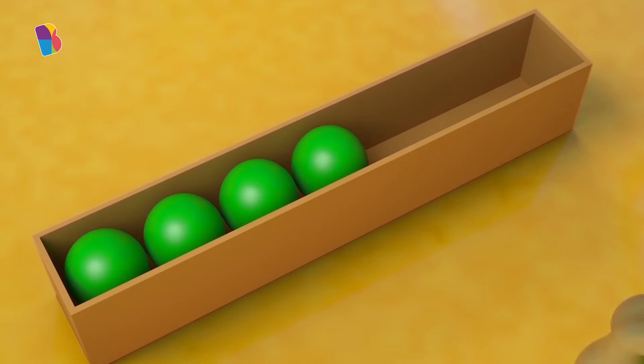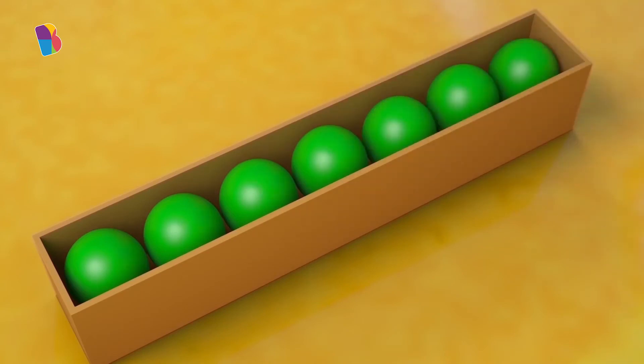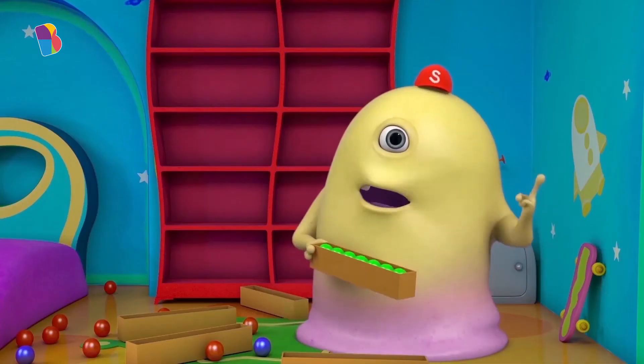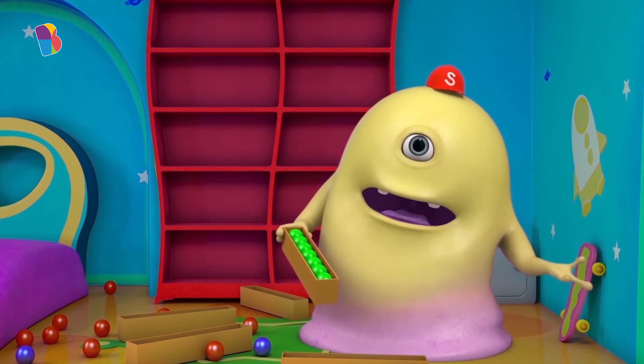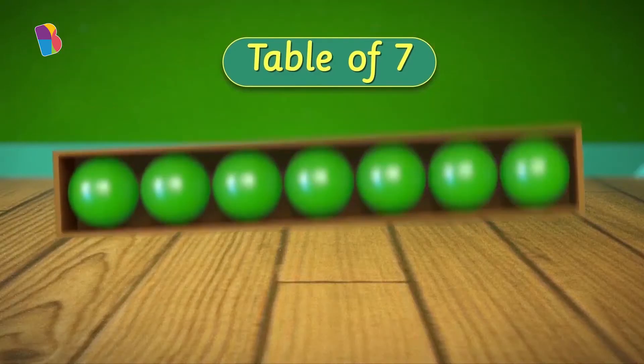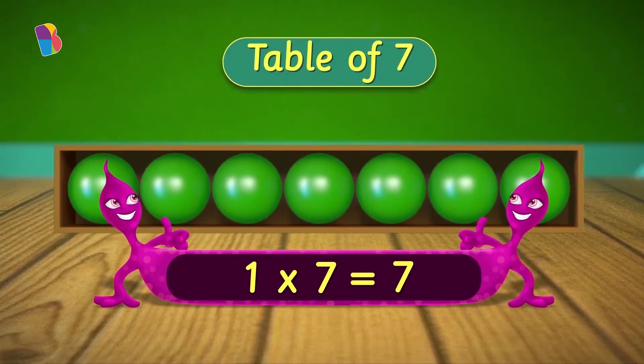One, two, three, four, five, six, seven. I have one box containing seven green jewels. So I can say one times seven is seven.